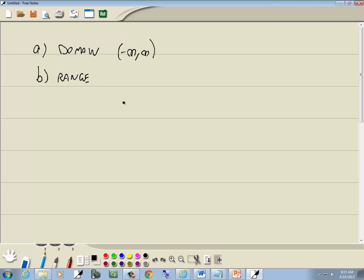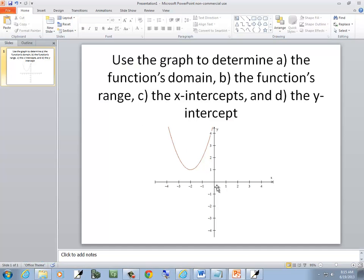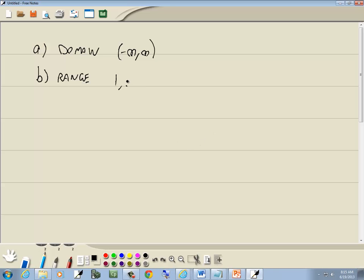Now, B is our range. Start with our lowest point. If I come down here to negative 1, if I go left or right, I don't find my graph anywhere. It doesn't exist down here. The lowest point on our graph is actually right here, which is at y is equal to 1. And then it goes up forever. So this is going to go from 1 to infinity.